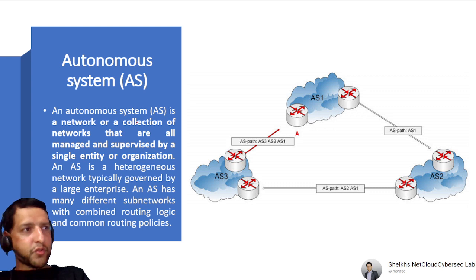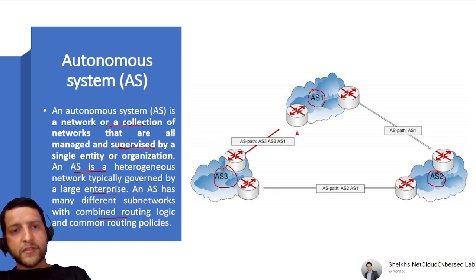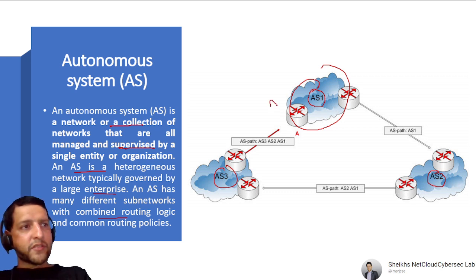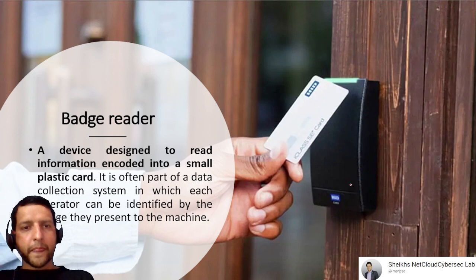An Autonomous System (AS) is a network or collection of networks managed and supervised by a single entity or organization. It is a heterogeneous network typically governed by a large enterprise, with many sub-networks, combined routing logic, and common routing policies. Each AS has an identification number, so routers know which autonomous system traffic is coming from. BGP connects different autonomous systems together.